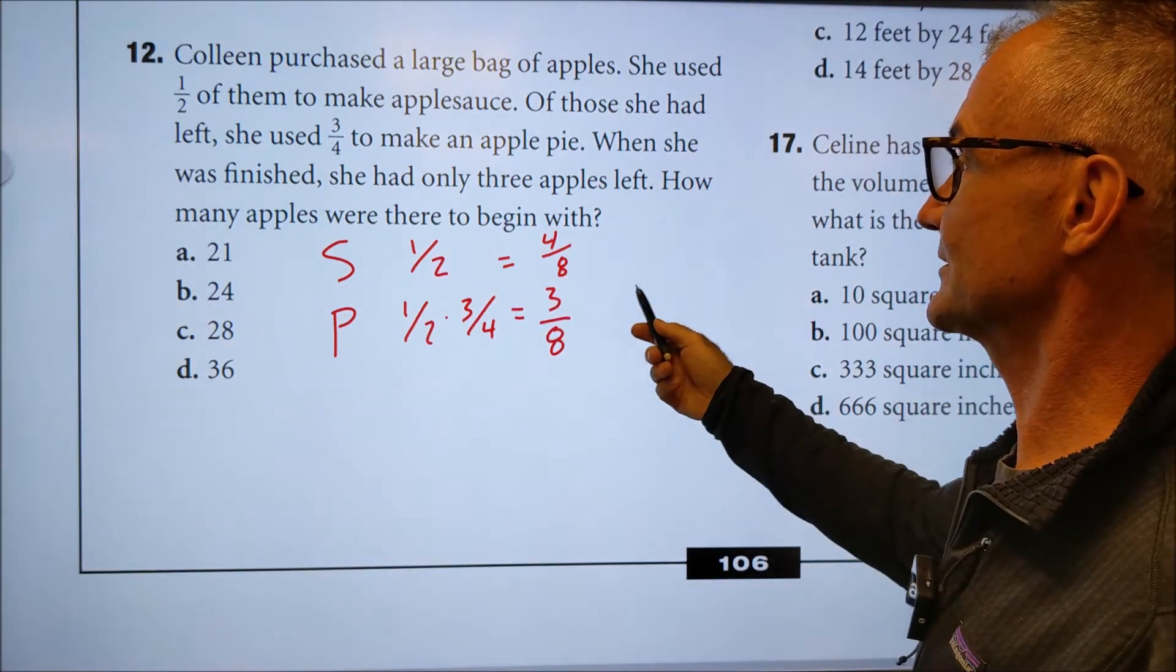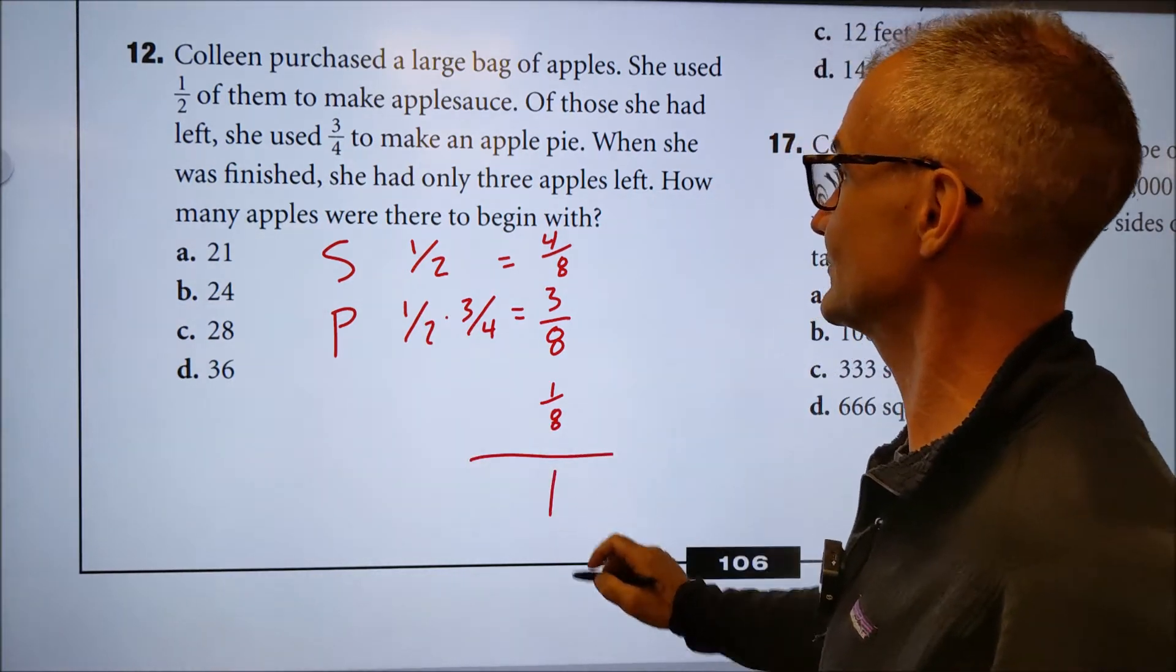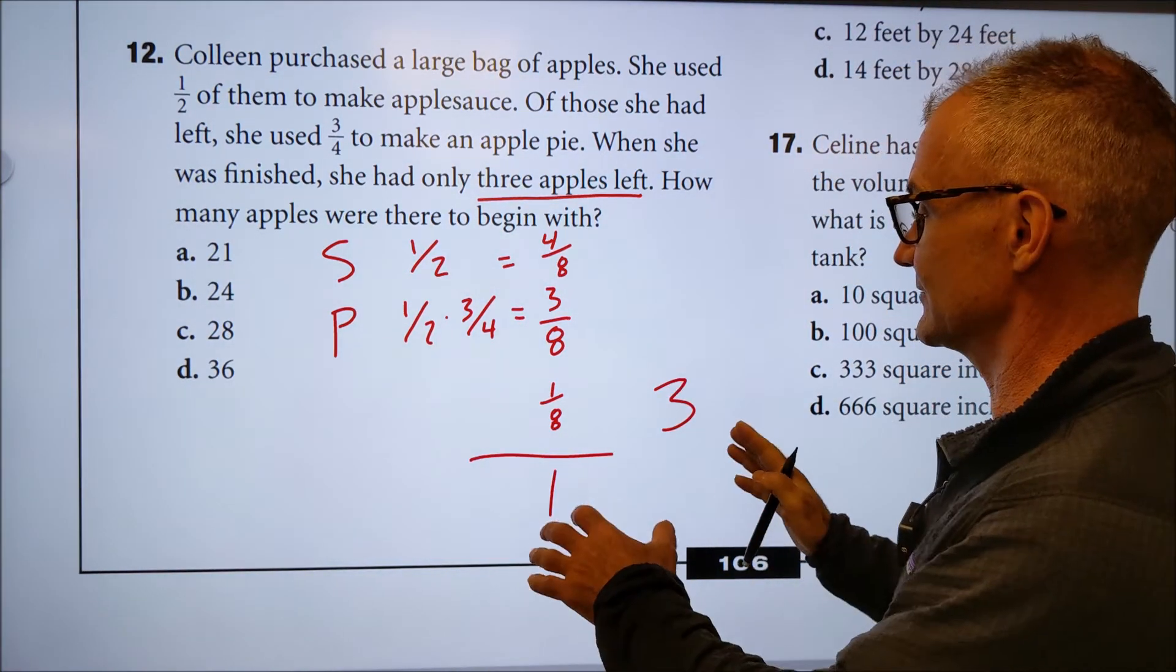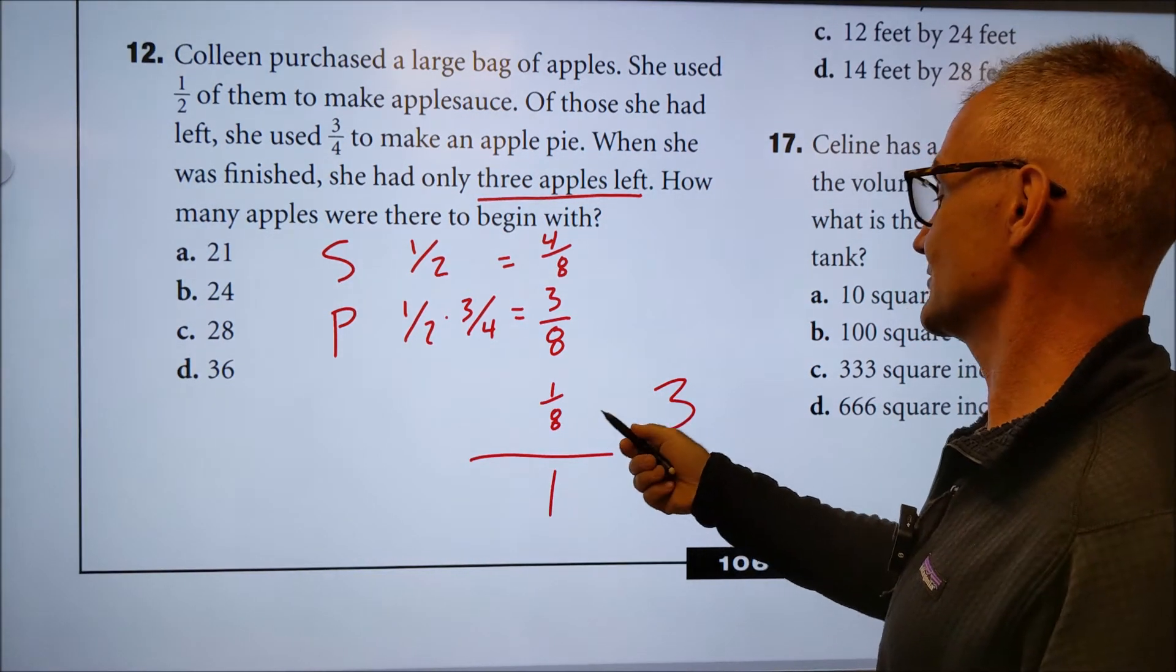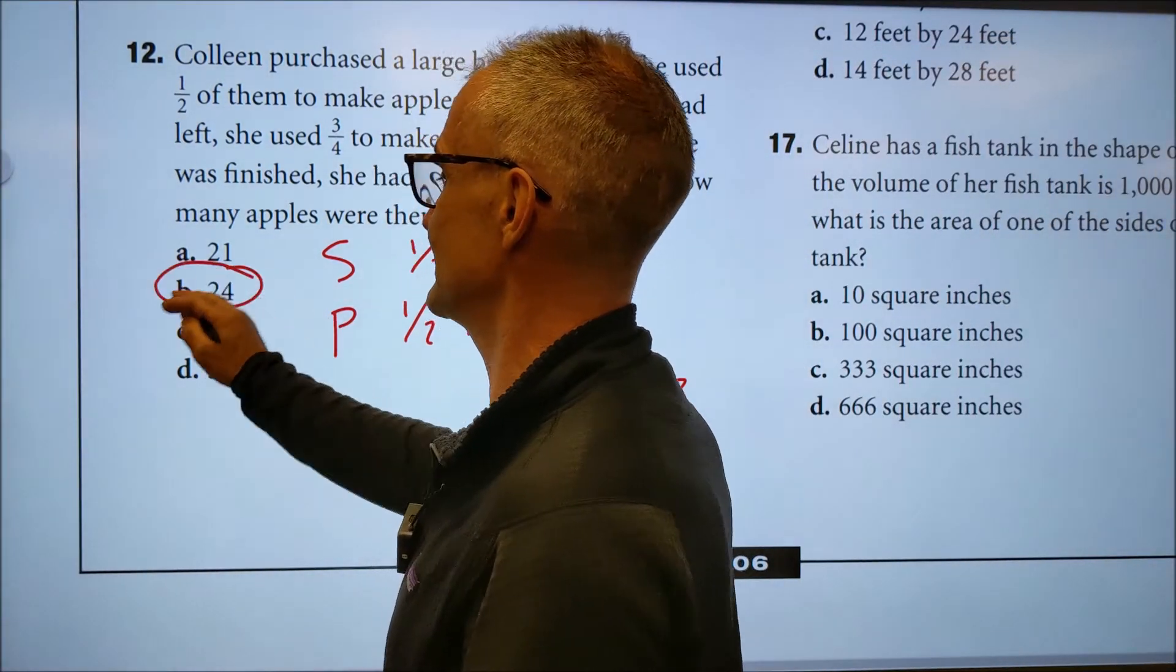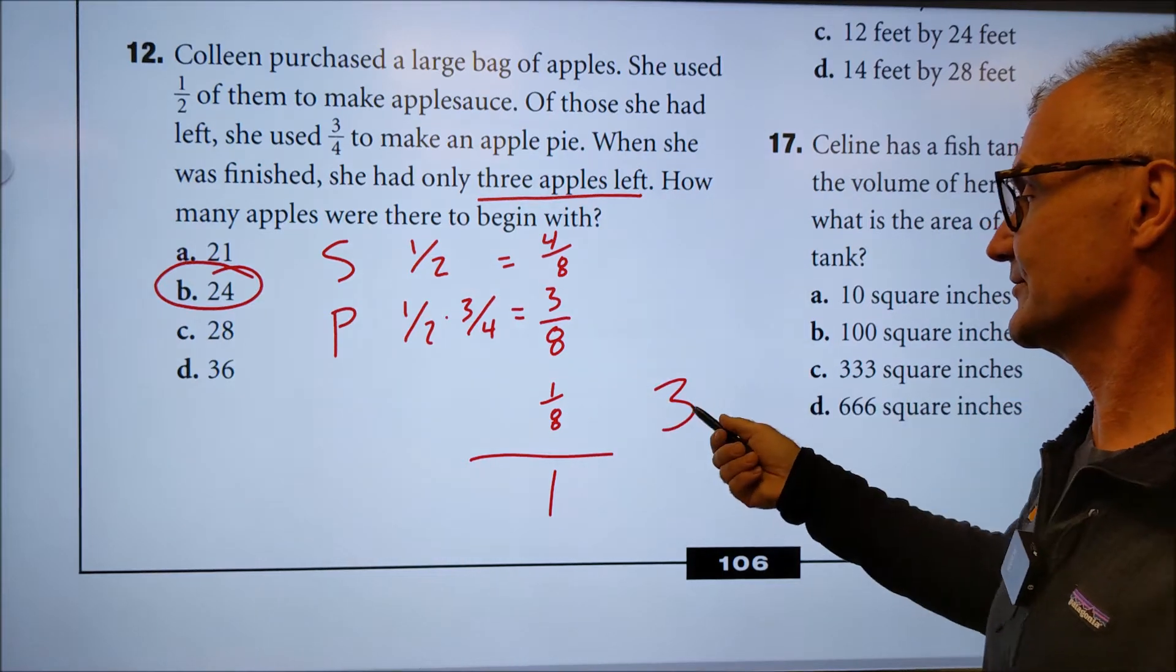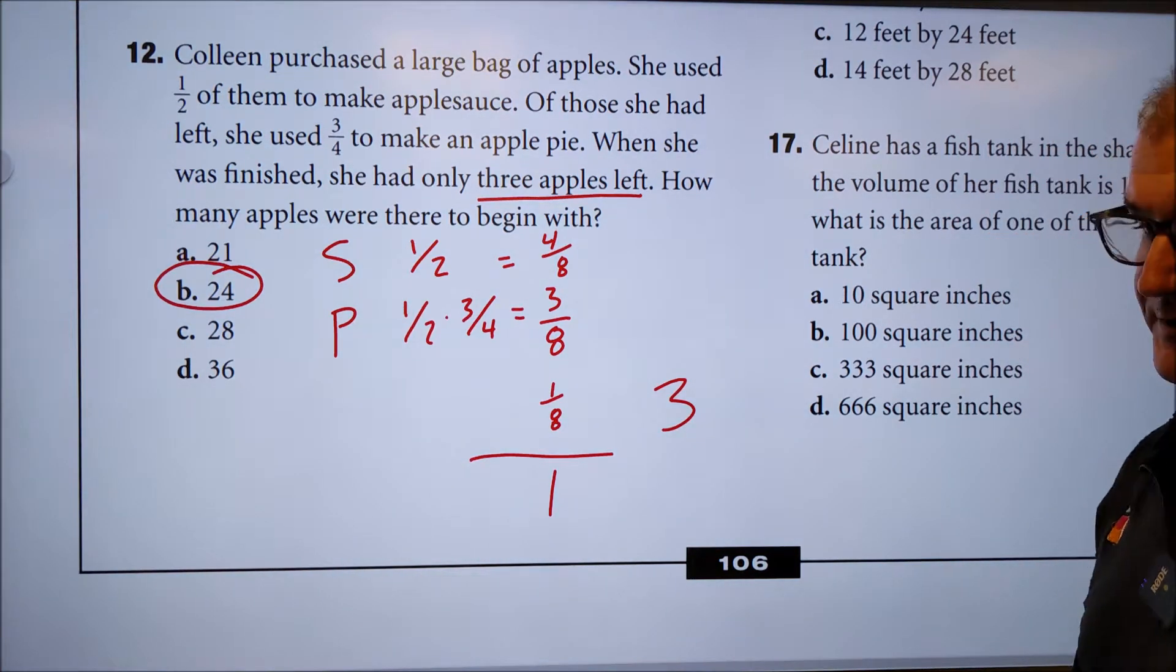How many apples were there to begin with? So we know we have one eighth of the total here. That's going to add up to one. Once you had finished, you only had three apples left. So that means that one eighth and three are equal. So if one eighth is three, then I got to find the total amount. So I'm going to multiply that three by eight to get 24, right? So there's my answer B right there, 24. And that kind of makes sense. There's one eighth of them left after the pie and the sauce. An eighth of them are three. An eighth of 24 is three. So that's where that comes from.